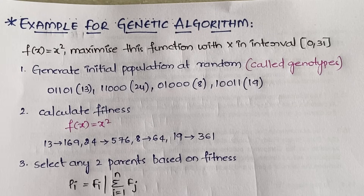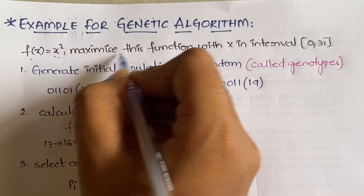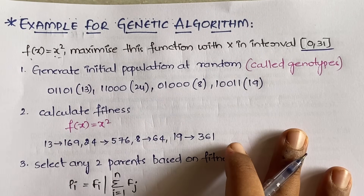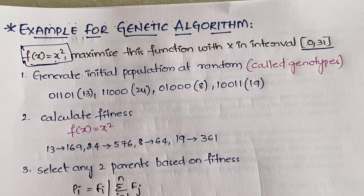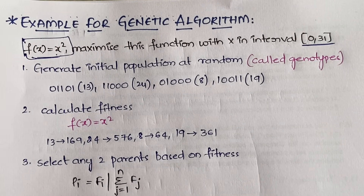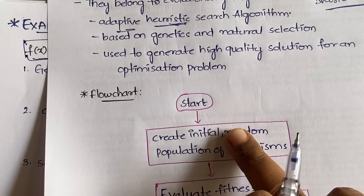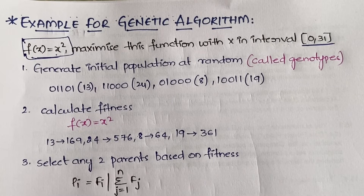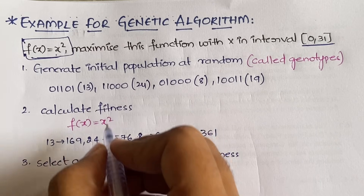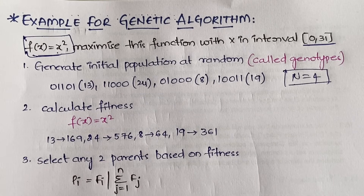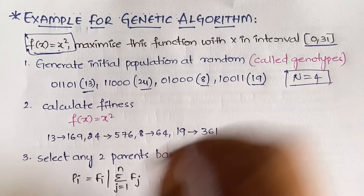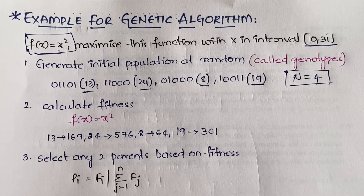The example we are taking here is f(x) = x², and you need to maximize this function with x in the interval 0 to 31. As explained in the flowchart from the previous video, the first step is to create the initial random population. You pick numbers randomly and represent them in binary. We have chosen four numbers: 13, 24, 8, and 19. You must write their binary representations.